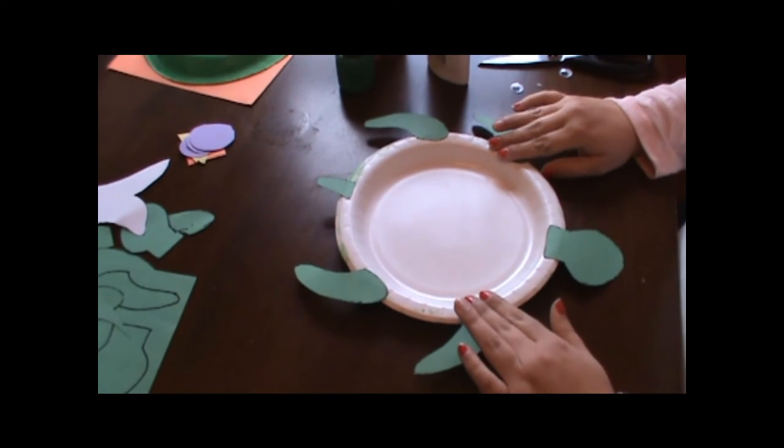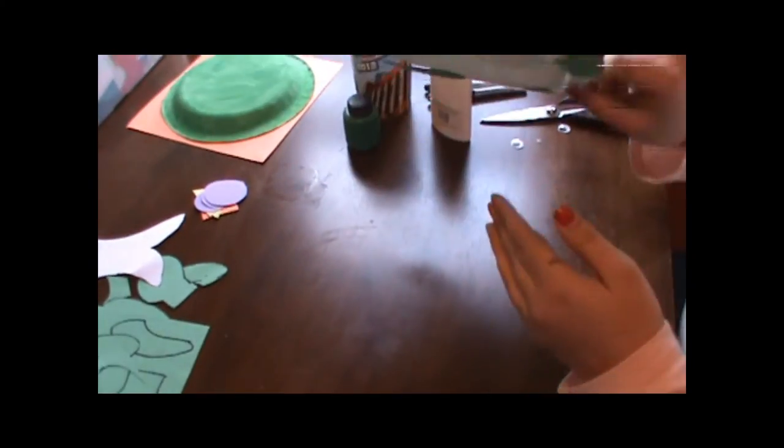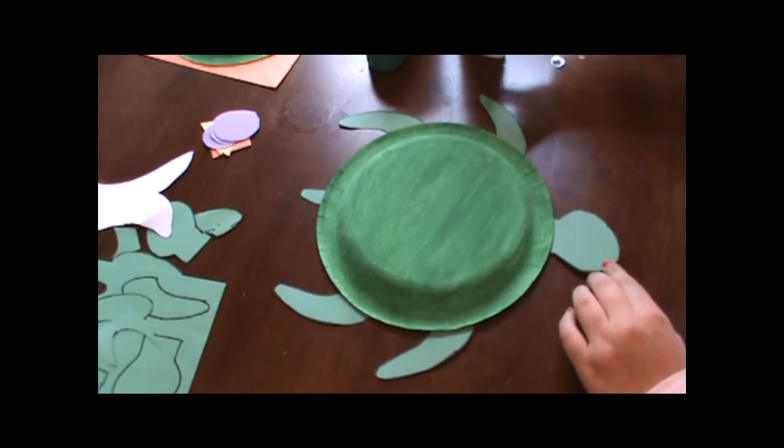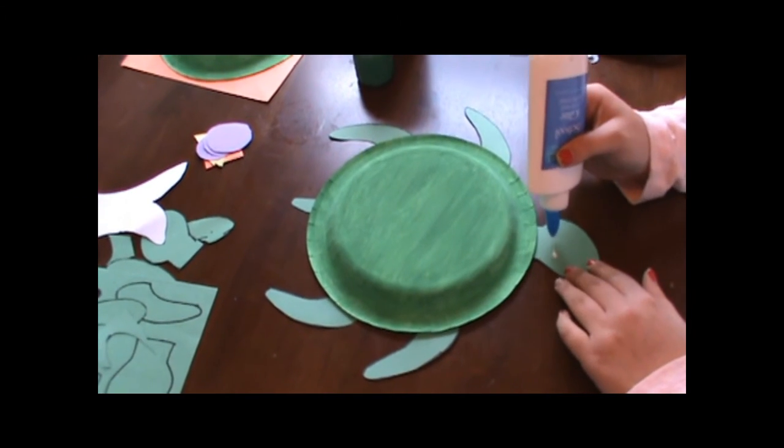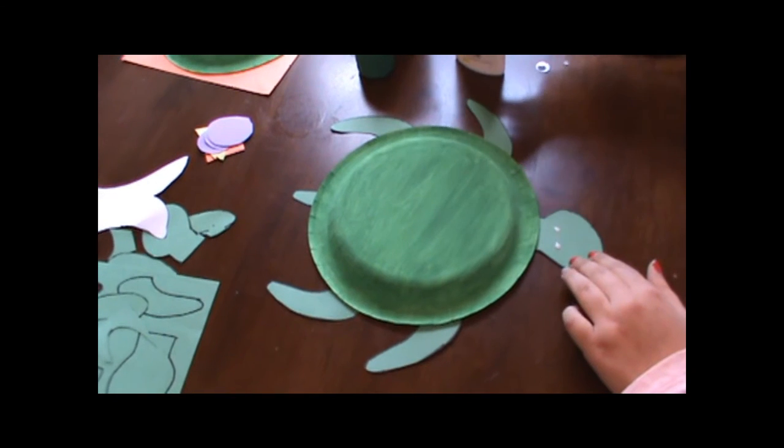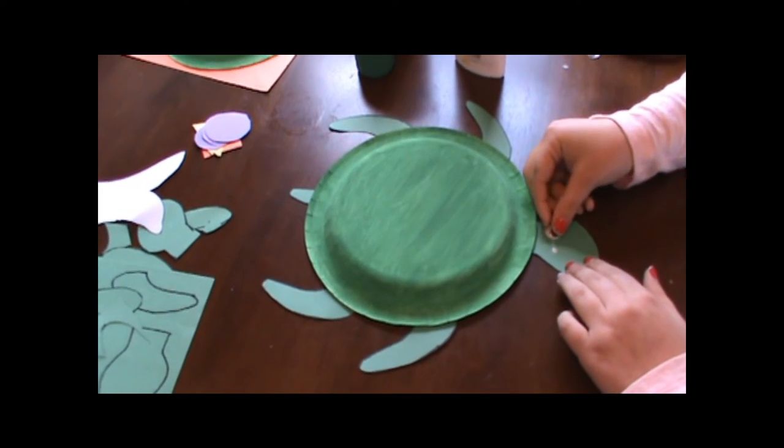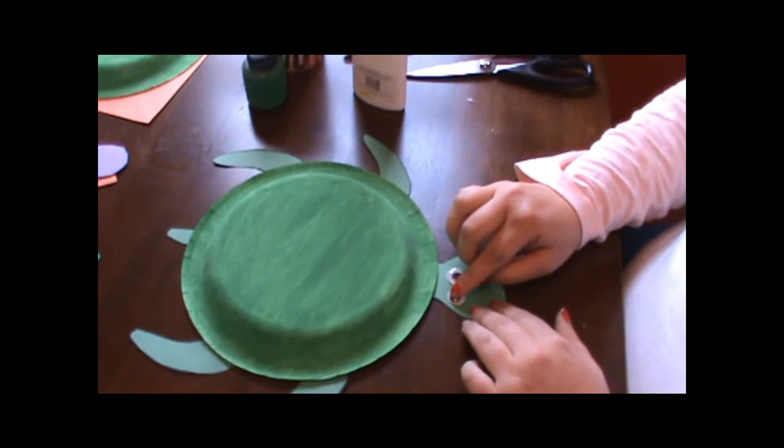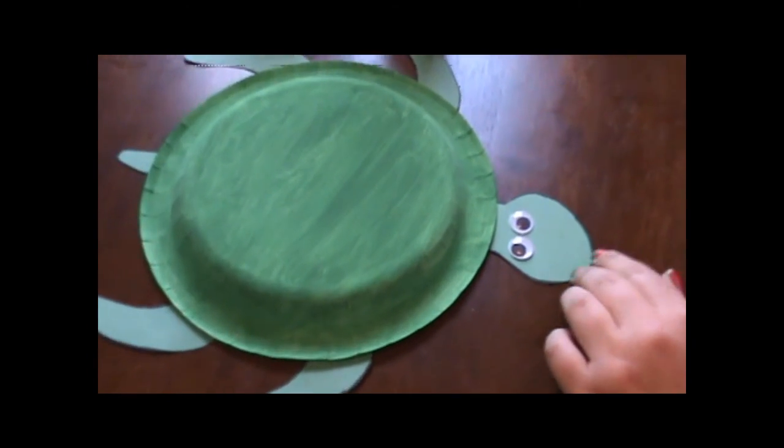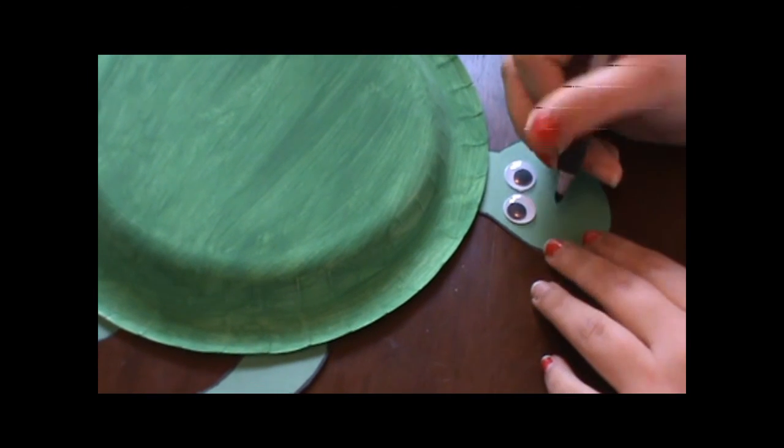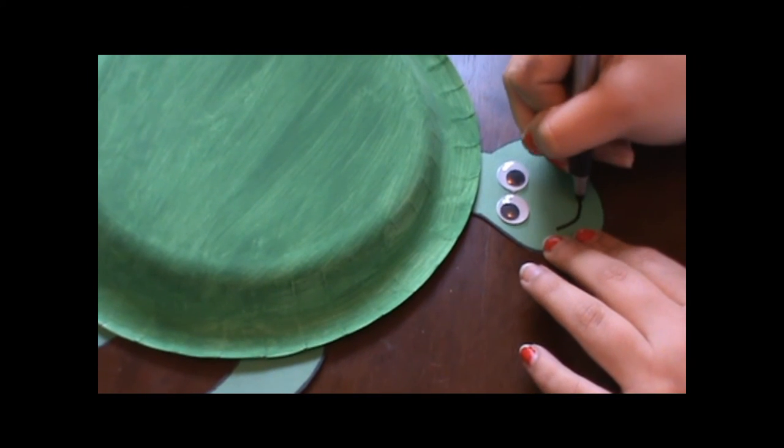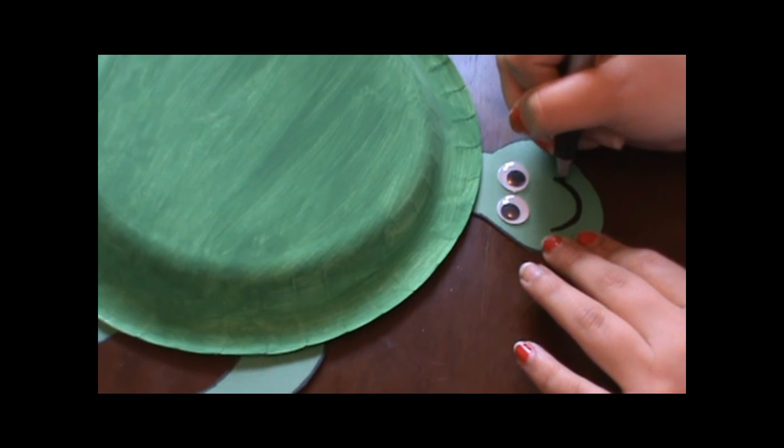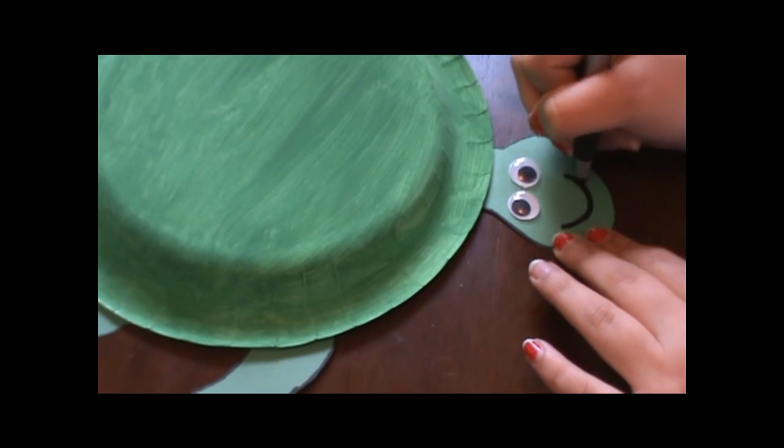Let your glue dry for a few seconds before you flip over the turtle. When that is finished, you need to put two dots of glue to glue on your eyeballs. Then you can draw on a mouth. You can make them smiling or whatever you want.